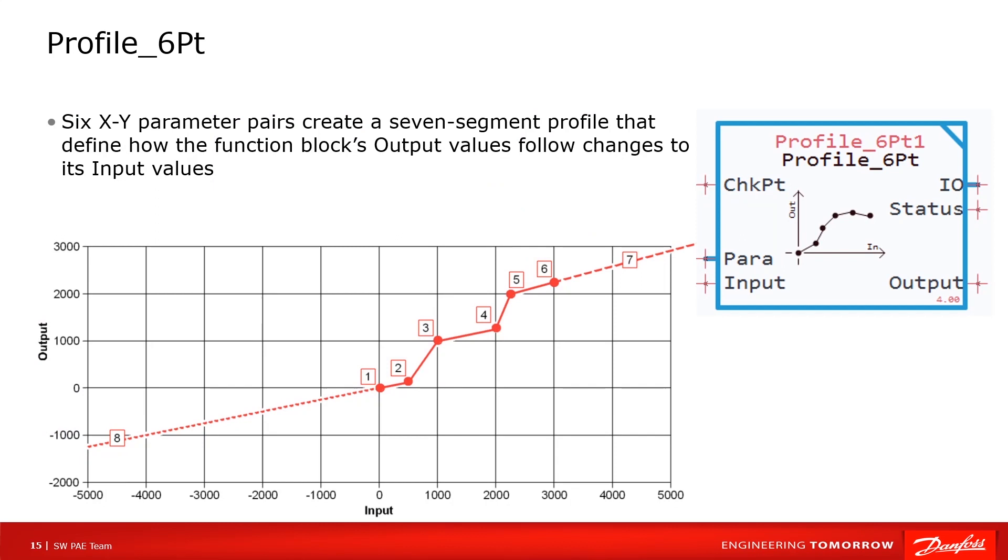Let's look at the next function block, Profile_6PT. Six pairs of x-y parameters create a seven-segment profile that defines how the function block's output follows its input value.